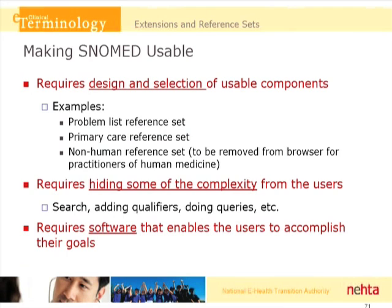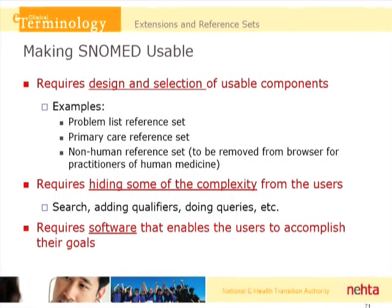In general, making SNOMED usable requires the design and selection of usable components. We might want to have a problem list reference set for use in the problem list in the patient record, or a primary care reference set that includes diseases and findings commonplace in primary care. We also have a non-human reference set — there are a number of diseases in SNOMED specific to animals, and for human medicine we might want to remove that reference set from displays. Making SNOMED usable also requires hiding some of the complexity, size, and intricacy from users. One way of doing that is to allow users...